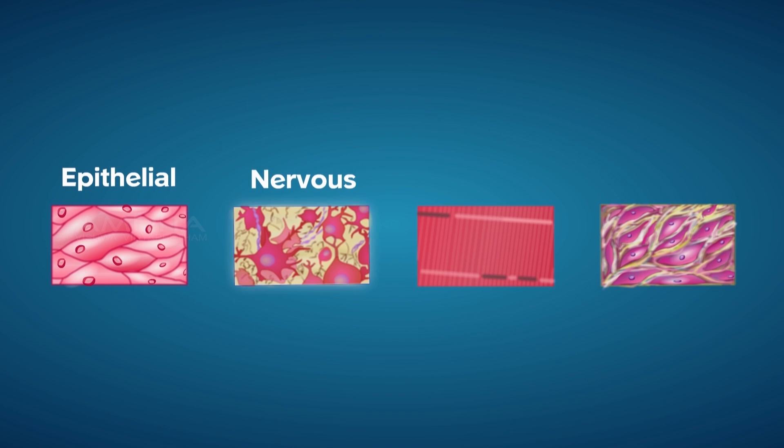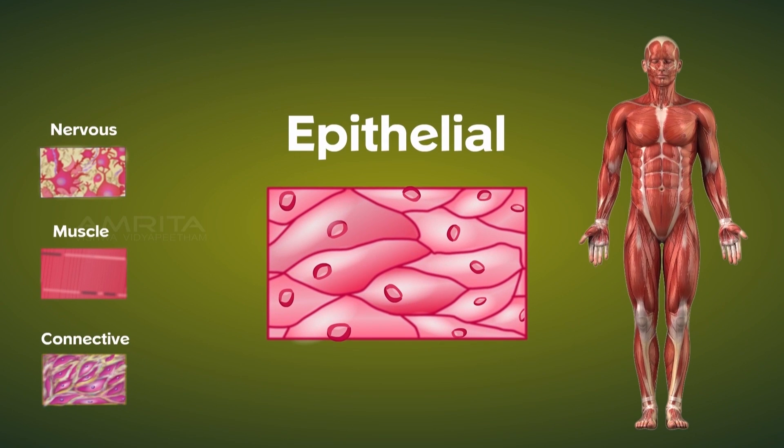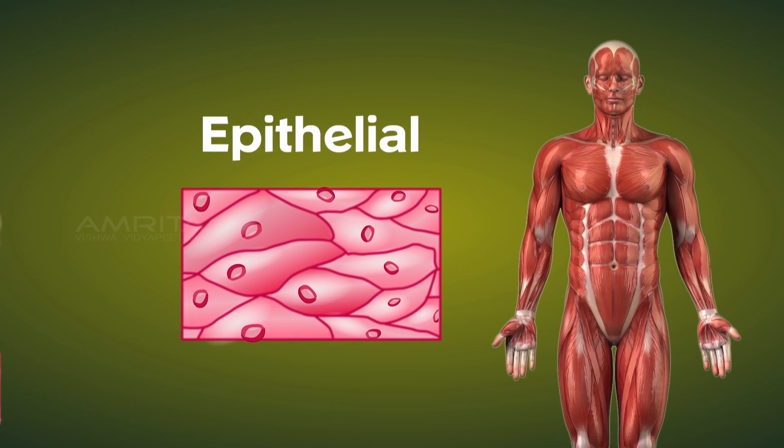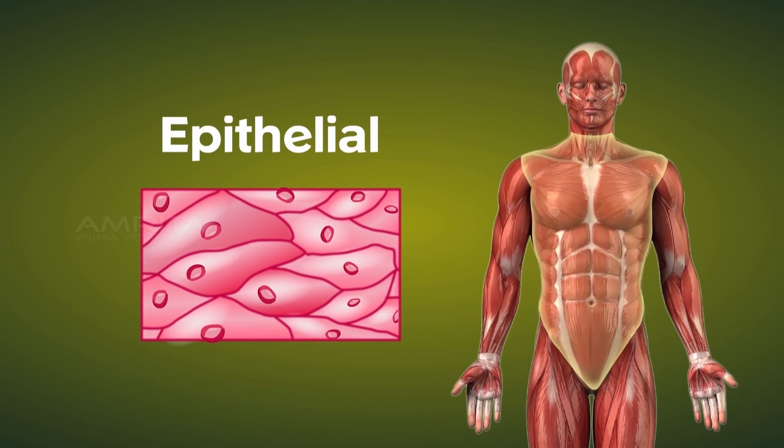epithelial, nervous, muscle and connective tissues. Let's first look at the epithelial tissue. This tissue covers and protects the internal and external surfaces of the animal body.